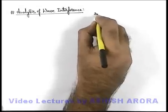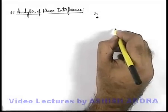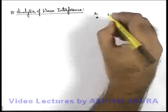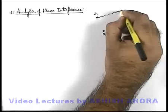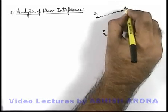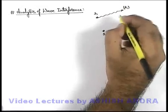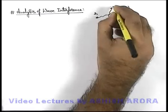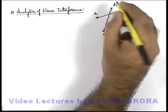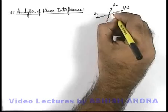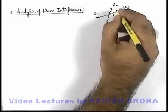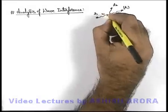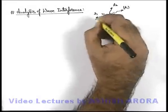Say if we have two sources S1 and S2 which are coherent, and S1 is producing a wave of amplitude A1 in a specific direction, and S2 is producing a wave of amplitude A2 in another direction, and at a medium particle P the two waves will superpose. Say point P is located at a distance x1 and x2 from the two sources.